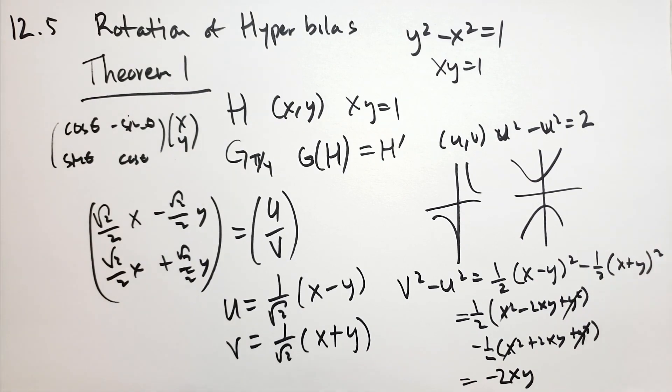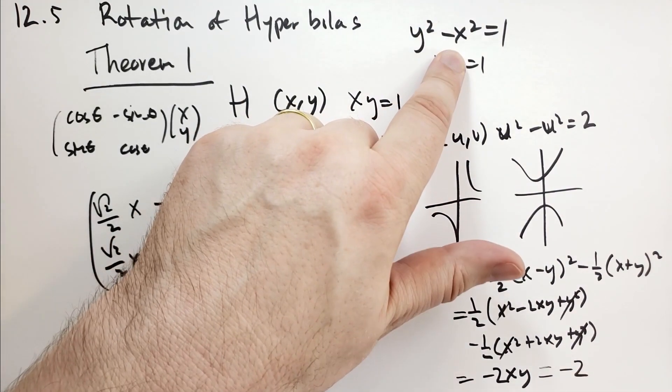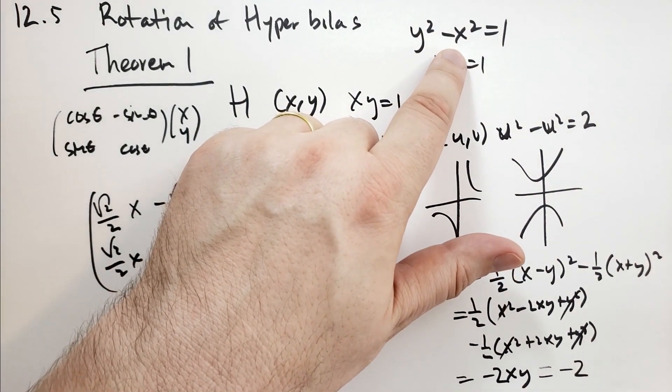What is xy equal to? It's equal to 1, so this is equal to minus 2. And that is how he proved that rotating the hyperbola will give you this equation.